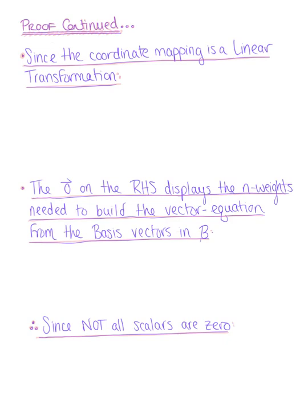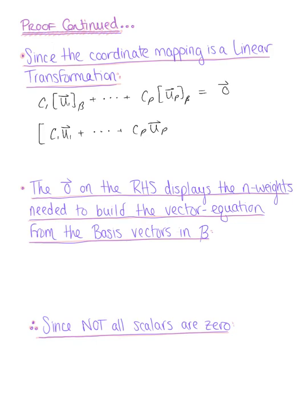Since the coordinate mapping is a linear transformation, we can rewrite this vector equation. We just saw that c_1[u_1]_b + ... + c_p[u_p]_b equals the zero vector with those weights not all zero. Because this is a linear transformation, we can rewrite this as [c_1·u_1 + ... + c_p·u_p]_b = 0, by definition of a linear transformation.